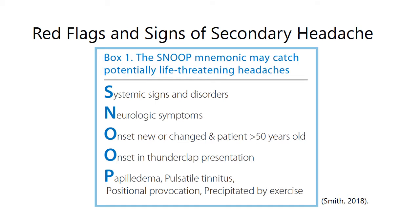For red flags and signs of secondary headache, we have the really useful SNOOP mnemonic, which comes from Smith 2018 and is quite commonly used to remind you of the signs and underlying conditions that might predispose patients to secondary headache. Starting with S, we're looking for any systemic signs or disorders — in particular, physiological observations such as hypo- or hypertension and tachycardia that we don't see with primary headache. Another good example is the fever that we see with meningitis.